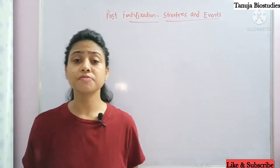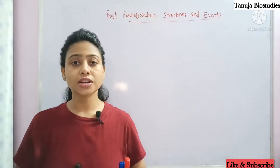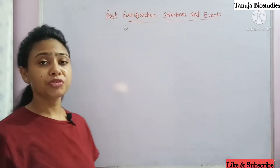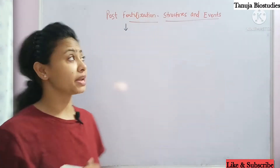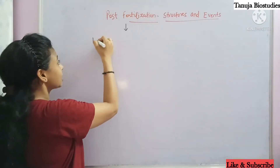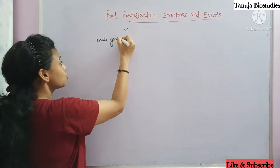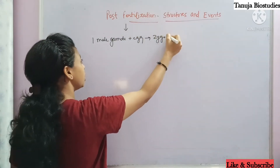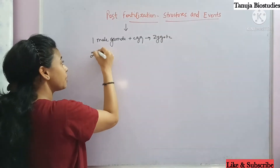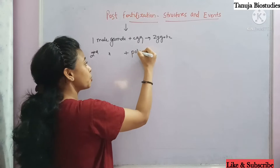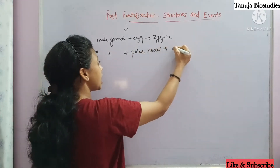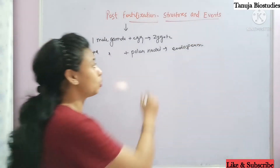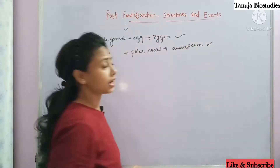Everything we have done. If you haven't seen all of them, please go through my previous videos — you will understand it in a much better way. Now we are talking about what happens after fertilization. One male gamete fuses with the egg cell and makes the zygote, and the second male gamete fuses with the polar nuclei and makes the endosperm. So now we are talking about the development of these two.